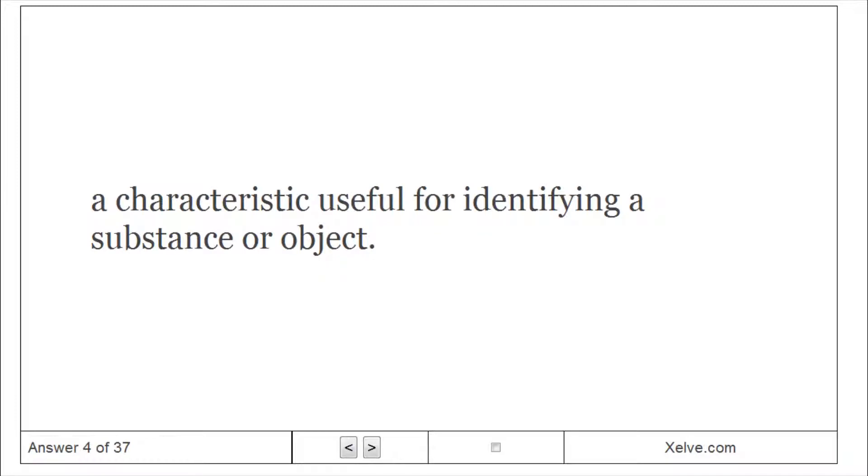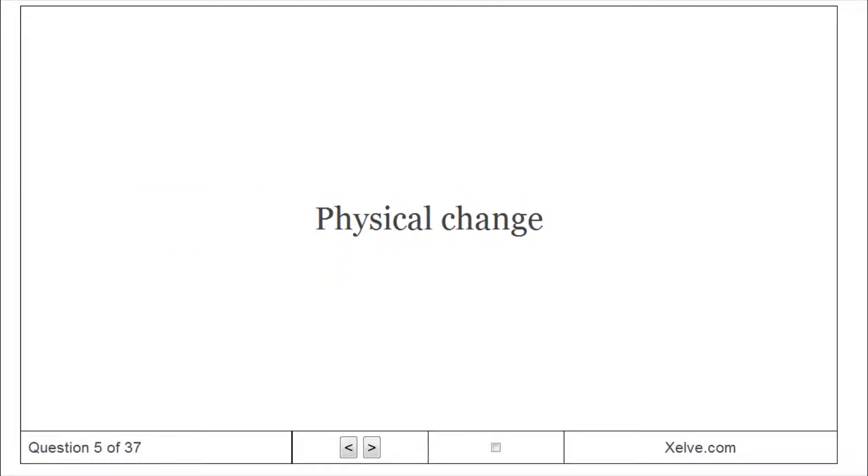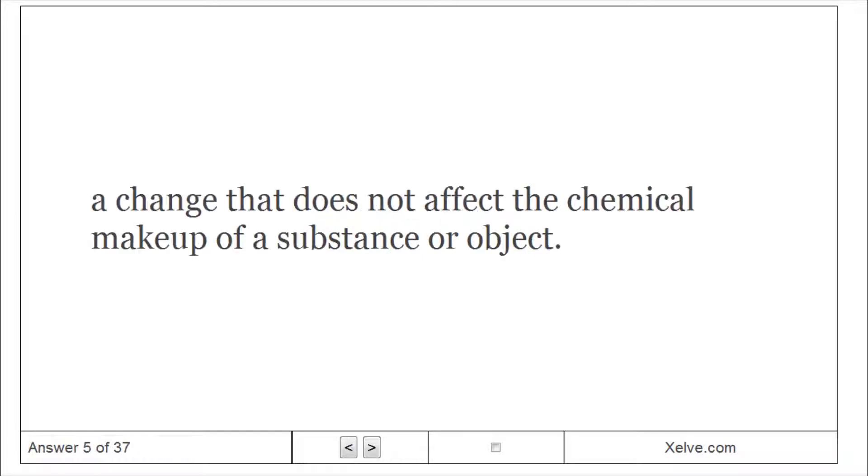Property: A characteristic useful for identifying a substance or object. Physical Change: A change that does not affect the chemical makeup of a substance or object.